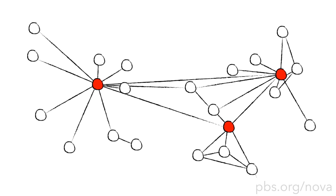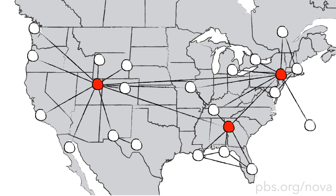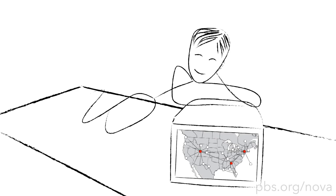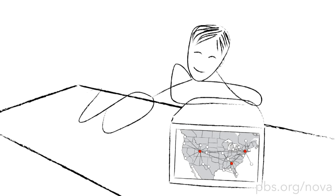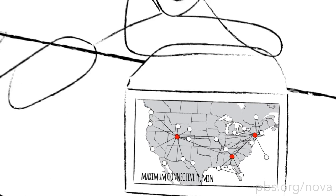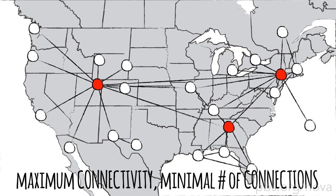And if you're thinking this sort of network shape looks familiar, you're right. Many of the networks that engineers design, like airline routes and power grids and the servers that power the internet, they all have the same pattern. And that's because small world networks have a special feature: they maximize connectivity while minimizing the number of connections.